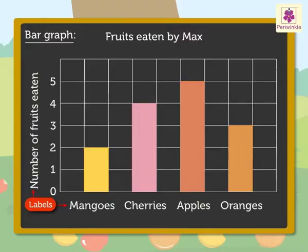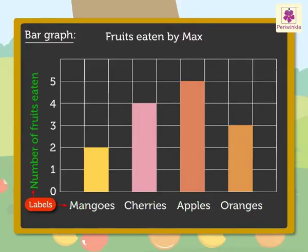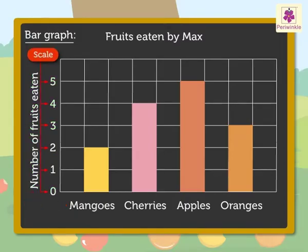The labels tell us that the data is about the kind and number of fruits eaten. The scale tells us the number of fruits eaten. Hence, from the bar graph we can say Max ate 2 mangoes, 4 cherries, 5 apples and 3 oranges.